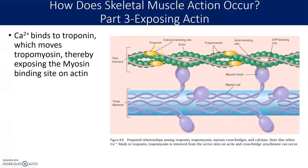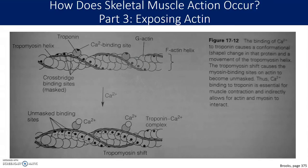Troponin is also connected to something called tropomyosin. When calcium binds to the troponin, the troponin moves and moves the tropomyosin with it. This is important because under normal resting conditions, the tropomyosin covers the spot where actin and myosin will interact. So calcium comes in, causes troponin to move the tropomyosin out of the way, and that allows myosin and actin to interact. You can see in the illustration that calcium binds on troponin, thereby exposing the active site on the actin and making it possible for actin and myosin to interact.